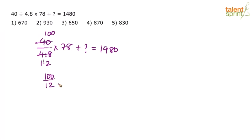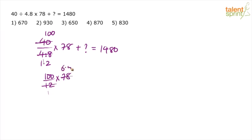So we have 100 by 12, which we took as 10 by 1.2, now written as 100 by 12 into 78. You can also say 50 by 6. Now, 12 into 1 and 12 into 6.5 gives 6.5, which is 200 — so 650. Plus question mark equals 1480.